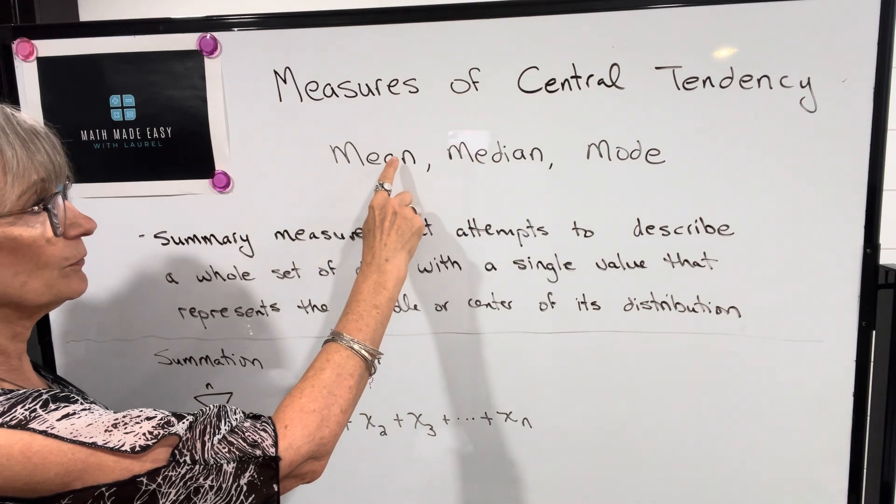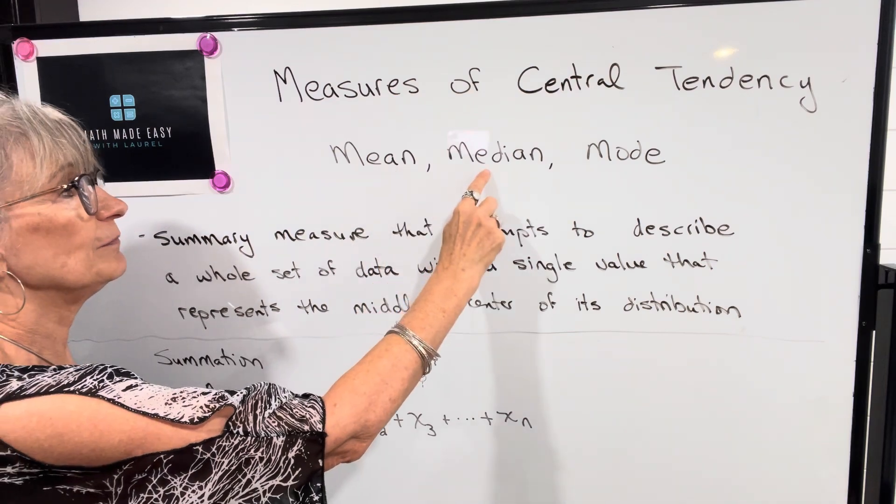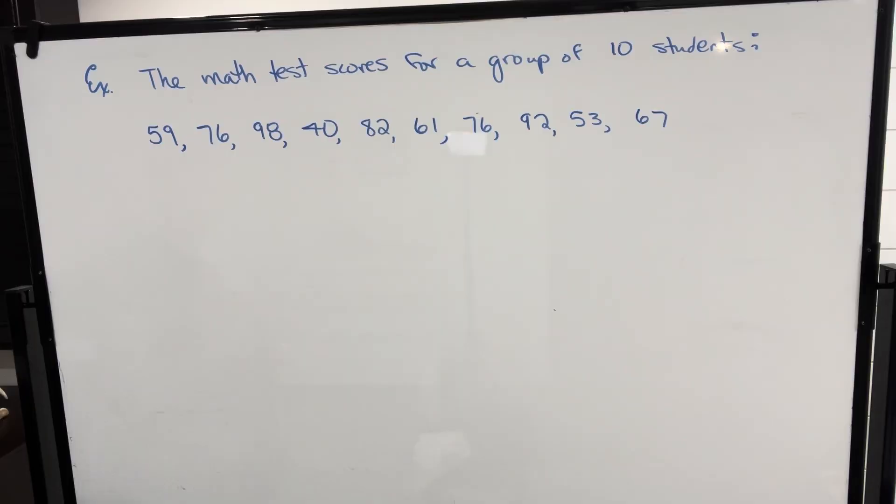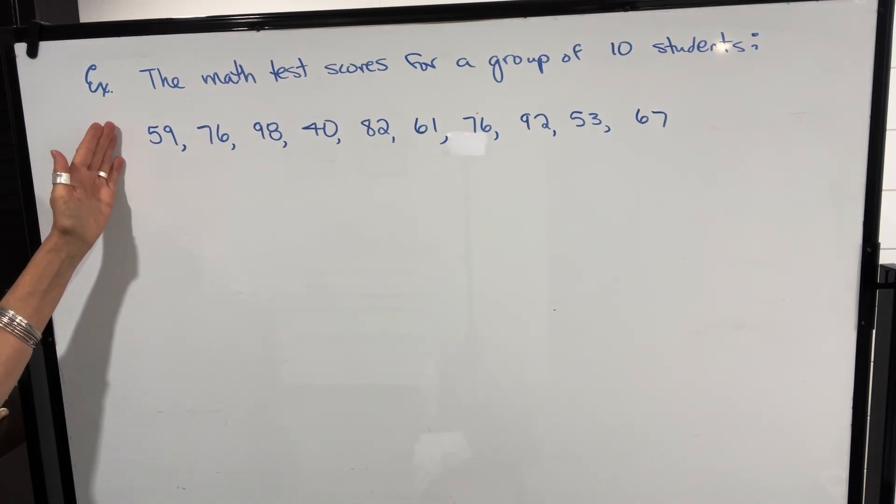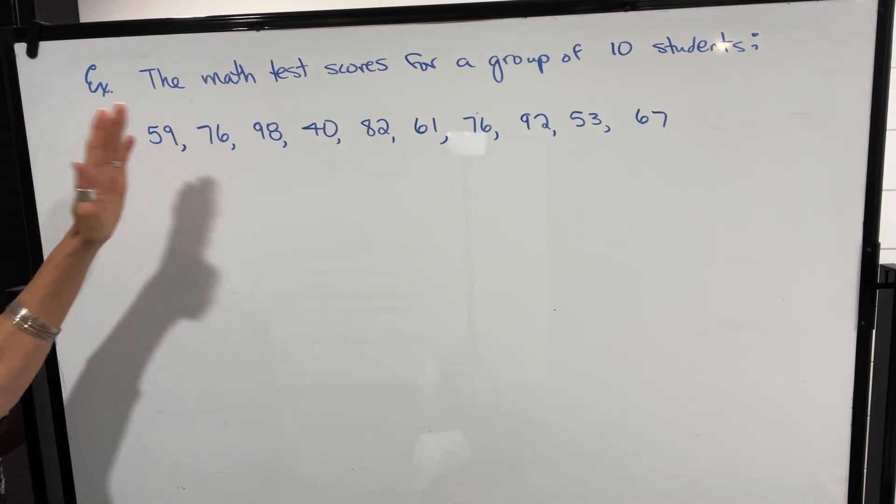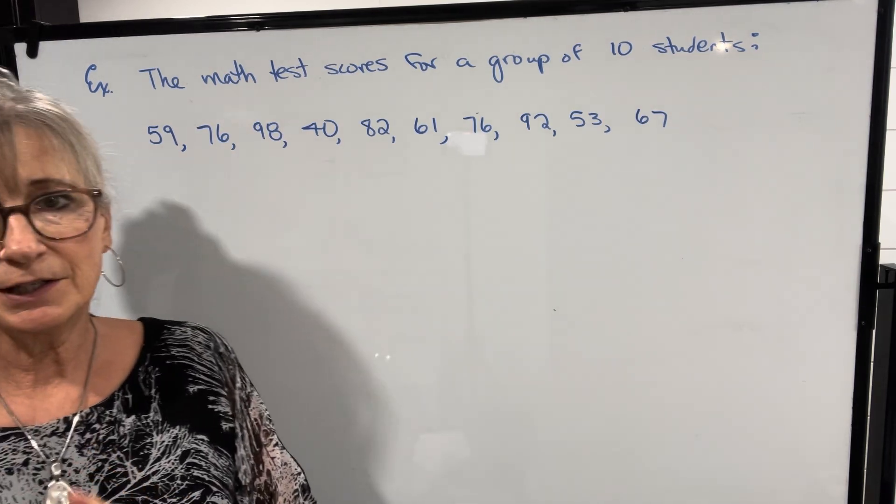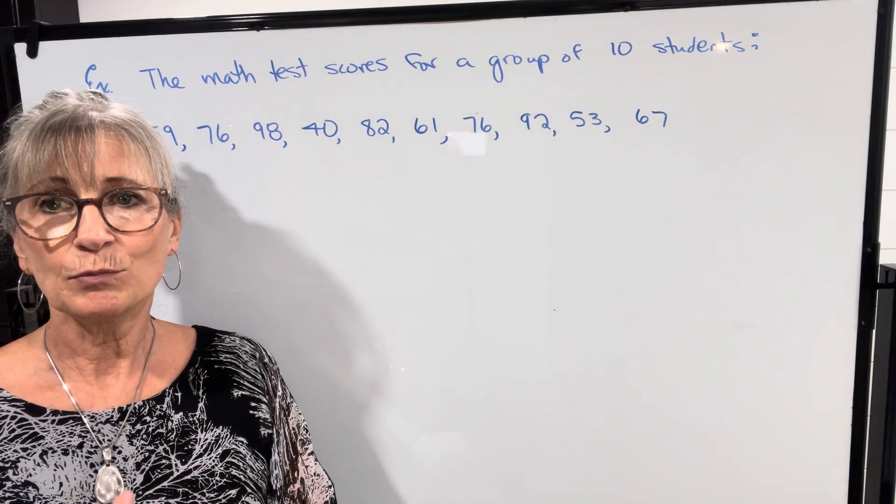Now let's look specifically at the definition of mean, median, and mode when you have a set of data. The example we're going to start with has math test scores for a group of 10 students as given. We're going to calculate the mean, the median, and the mode.